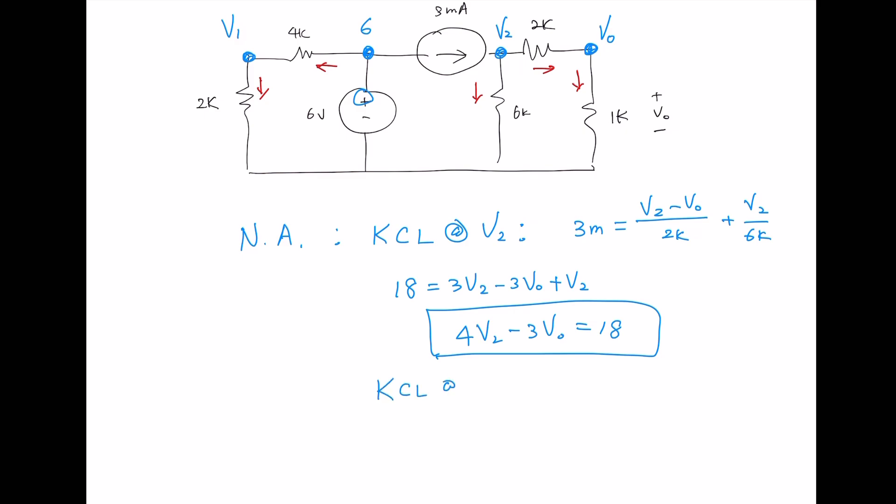KCL at V0 that is entering V2 minus V0 over 2K equals leaving V0 over 1K.